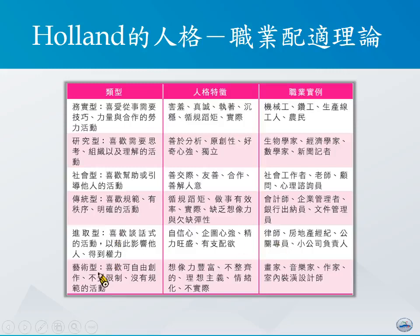最后是艺术型，艺术型的人喜欢的工作特性包括可以自由自在地创作、不受任何限制，并且没有什么规范。这类的人通常想象力较为丰富，通常并不整齐，会有较高的理想主义，而且很多时候比较情绪化，并且不具备实际。这类人所适合的职业，可能包括画家、音乐家、作家，或者是设计师等等。